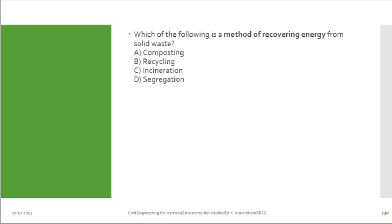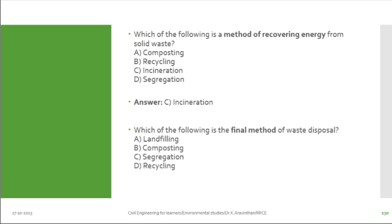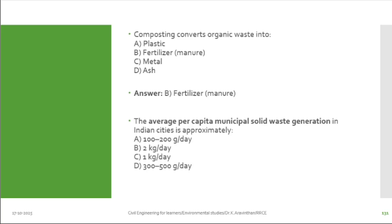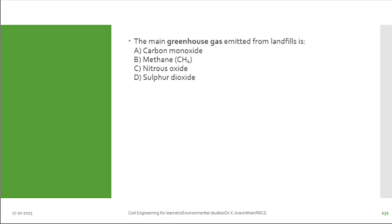Which method recovers energy from solid waste? Recovering energy means electrical energy. By incineration — burning — you can create electrical energy, like in a thermal power plant. Which is the final method of waste disposal? Land filling. Composting converts organic waste into fertilizers. The average per capita municipal solid waste generation is 300 to 500 grams per day. The main greenhouse gas emitted from landfill is methane gas.